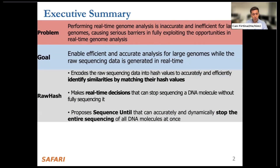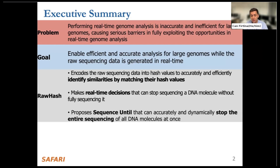To this end, RawHash encodes the raw sequencing data into hash values to accurately and efficiently identify similarities between signals by matching their corresponding hash values. By analyzing the genomes in real-time, RawHash can make real-time decisions that can stop sequencing a DNA molecule without fully sequencing it. We also propose a technique called Sequence Until that can accurately and dynamically stop the entire sequencing of all DNA molecules at once if further sequencing is not necessary for specific use cases.